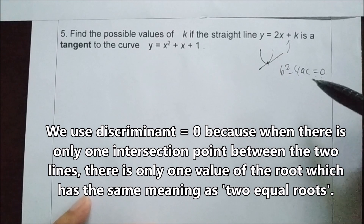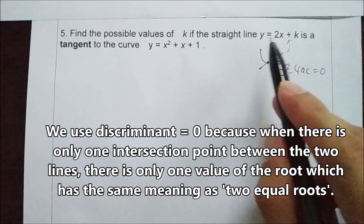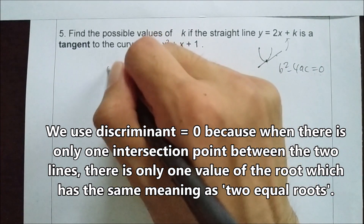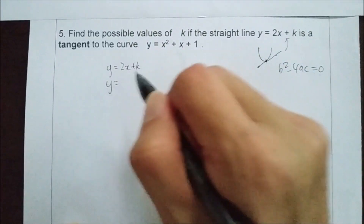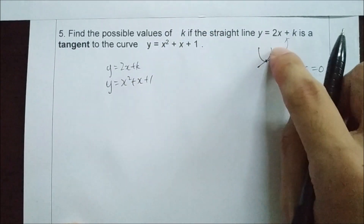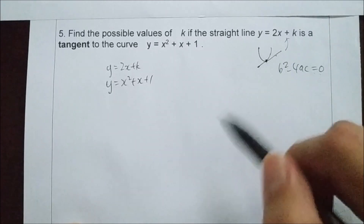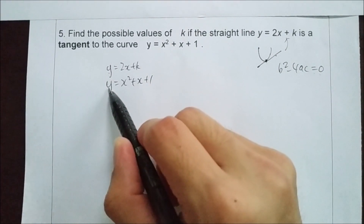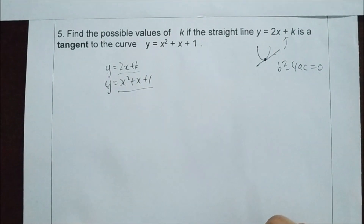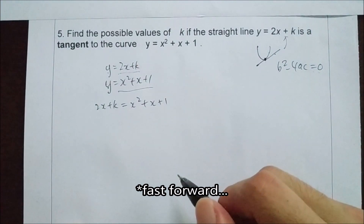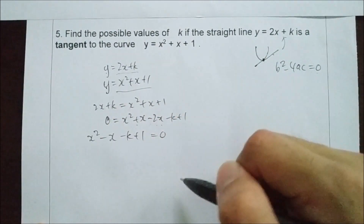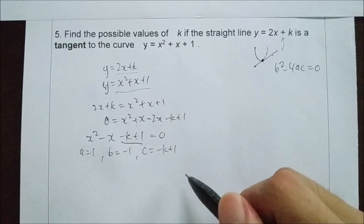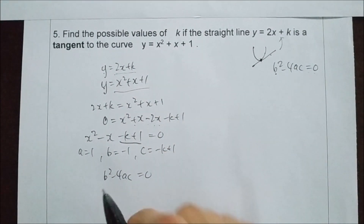If there is only one root, both values of x are the same. We substitute y equals 2x plus k — the equation for the straight line — into y equals x squared plus x plus 1 — the equation of the curve. If they meet at that point, y will equal y, so we set the expressions equal. Substituting and applying b squared minus 4ac equals 0, where b squared gives negative 1 squared, we solve for k.